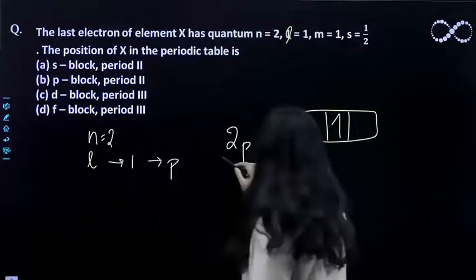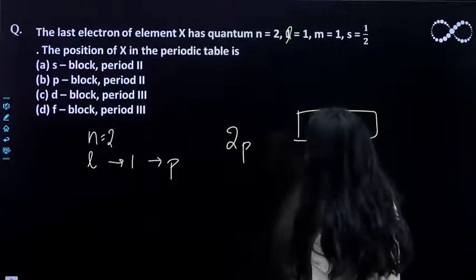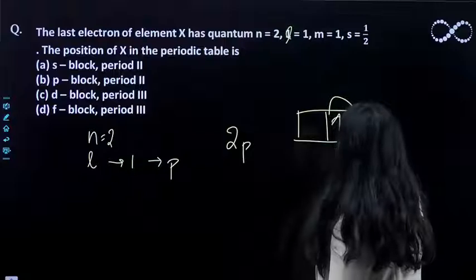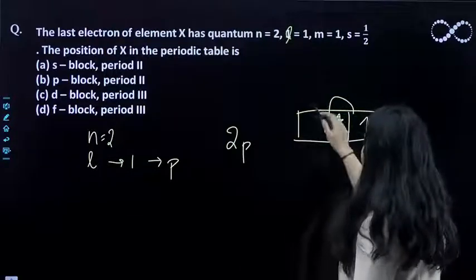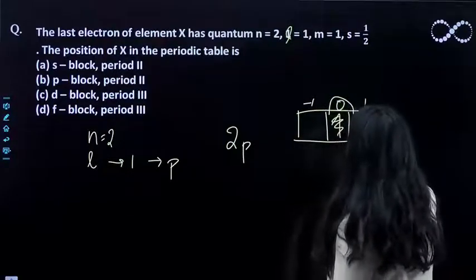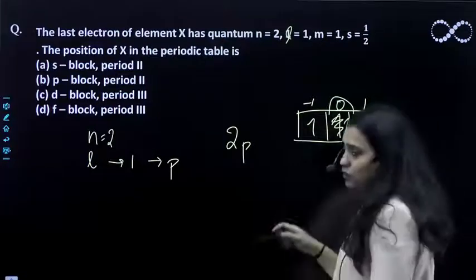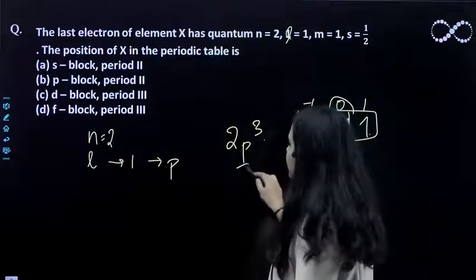Therefore the configuration should be 2p², because if the electron is at m equals - sorry, m equals 1, the electron goes here. This is minus 1, 0, and 1, so you have 3 electrons. The configuration is 2p³.